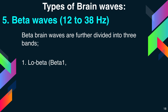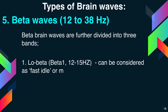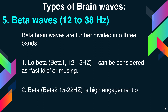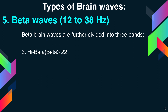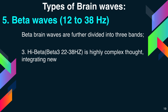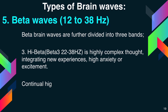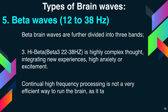Low beta, or beta 1, at 12 to 15 hertz, can be considered fast idle or musing. Beta 2, between 15 to 22 hertz, is high engagement or actively figuring something out. High beta, or beta 3, between 22 to 38 hertz, involves highly complex thought, integrating new experiences, high anxiety and excitement. Continued high frequency processing is not a very efficient way to run the brain, as it takes a tremendous amount of energy.